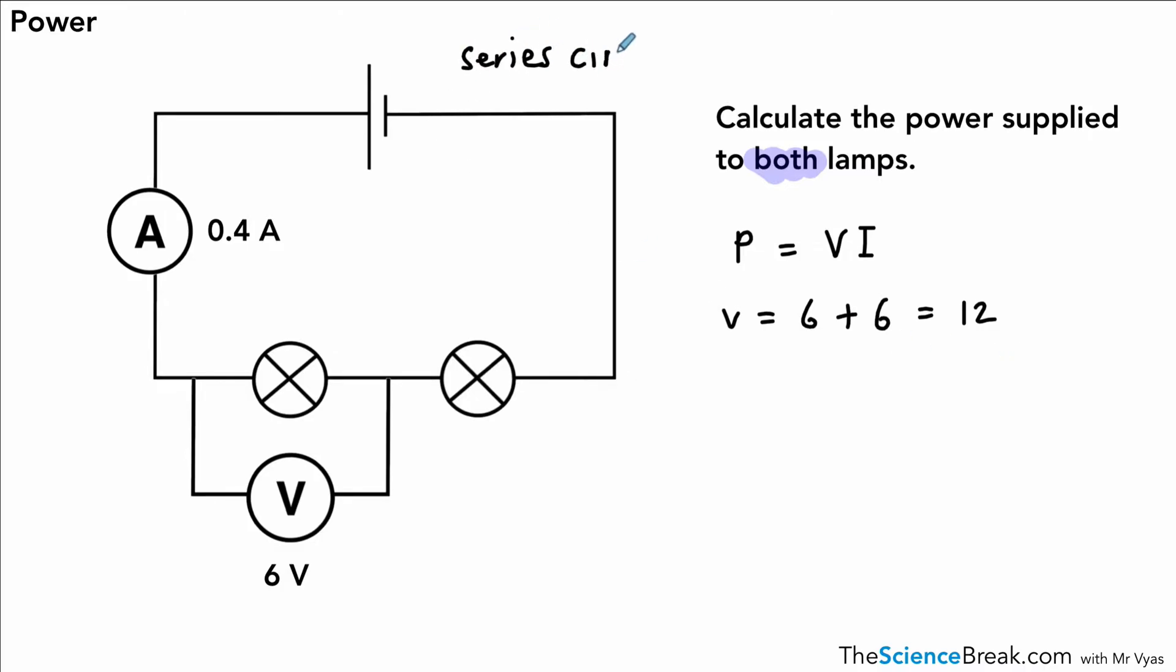How do we know the other one is 6 volts as well? Well, in a series circuit, remember, the potential difference is shared between the components. So if that one's got 6 volts and the other one is identical, then that one also will have a potential difference of 6 volts across it as well. So now it becomes a lot easier.